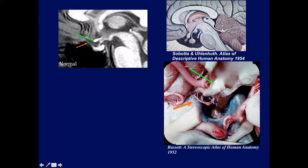On the sagittal view, this is the third ventricle with the massa intermedia. This is the chiasm, which is wedged into the floor of the third ventricle. This is the lamina terminalis — a very thin membrane — so named because in primitive animals without hemispheres, this is where the neural tube ends, the most anterior part of the neural tube. The floor of the third ventricle has the chiasm wedged into it, creating two recesses: the optic recess and the infundibular recess. Then we have the pituitary stalk and pituitary gland.